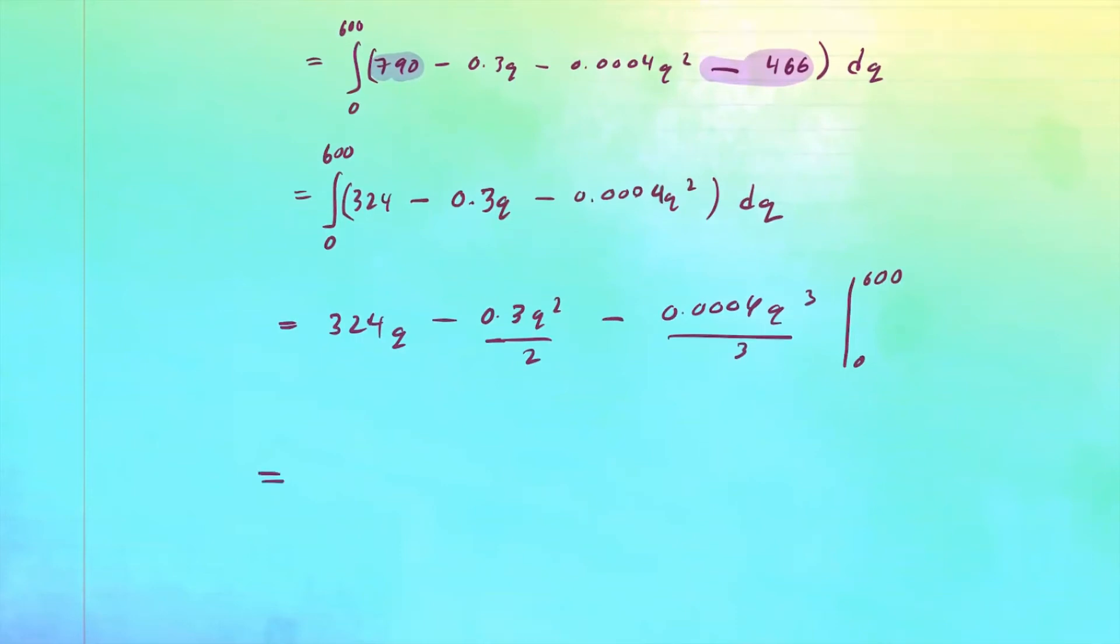So now go ahead and plug in the upper limit. So this is 324 times 600 minus 0.3q squared over 2 minus 0.0004q cubed over 3.